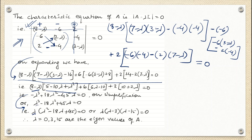Taking λ as common: λ(λ² - 18λ + 45) = 0, which factors to λ(λ - 3)(λ - 15) = 0. The three roots are λ = 0, 3, and 15. These are the three distinct eigenvalues of the given matrix A. In this class we see distinct eigenvalues; next class we will handle repeated eigenvalues.